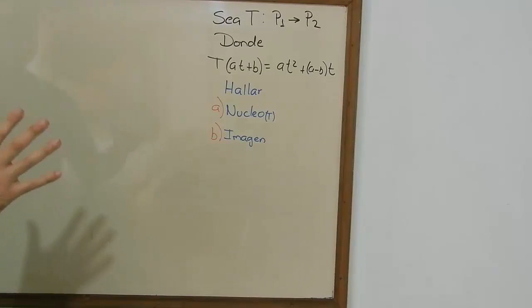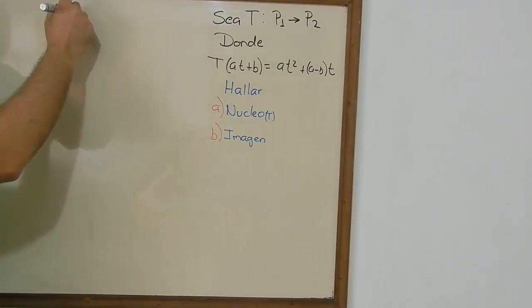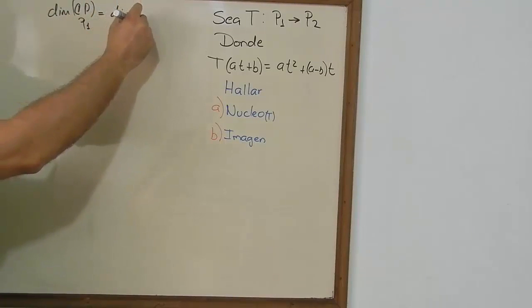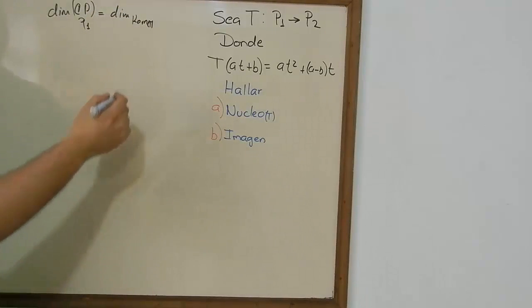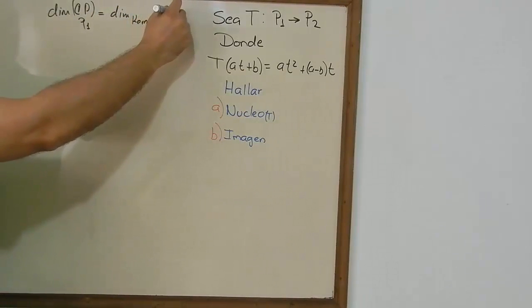And for this we would like to go over some stuff just to make sure we get the right answer. So the dimension of the starting point, which is gonna be the polynomials of order 1, is equal to the dimension of the kernel plus the dimension of the range of this transformation.